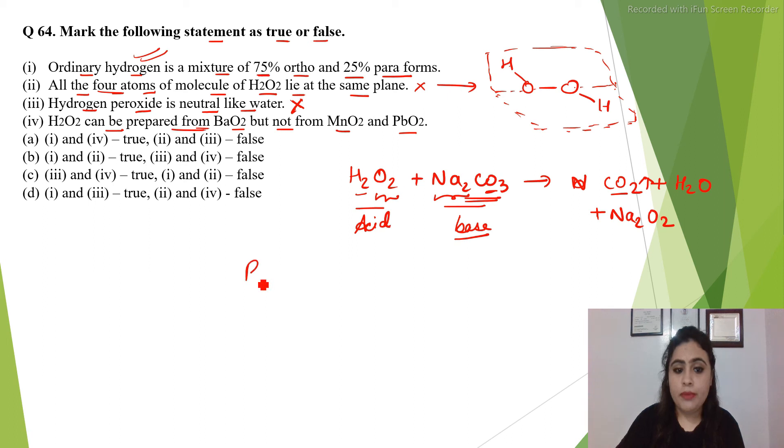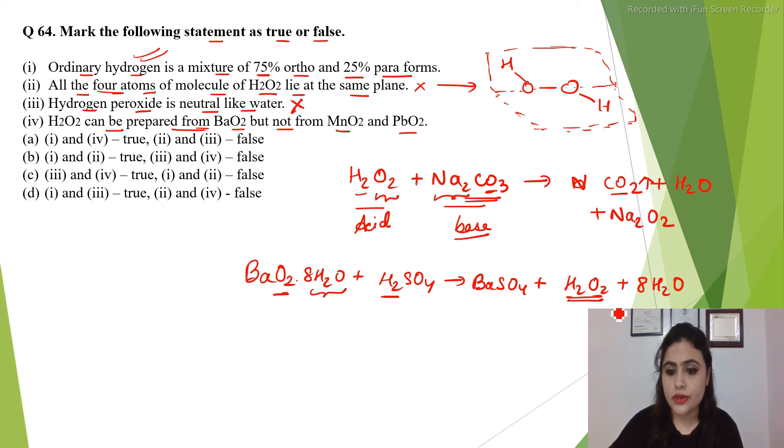H2O2 is prepared from barium peroxide because when barium peroxide react with H2SO4, we get barium sulfate plus hydrogen peroxide plus 8 molecules of water. Now, this 8 molecules of water in H2O2 will react to form hydrogen peroxide. So this is also used but from MnO2 and PbO2, we can't prepare hydrogen peroxide.